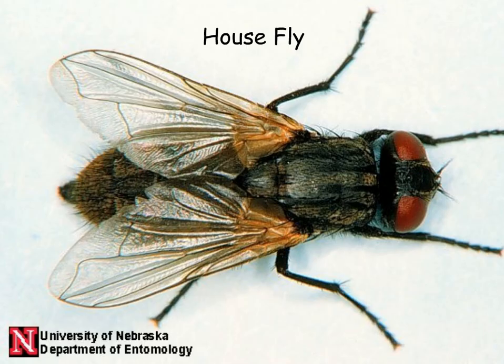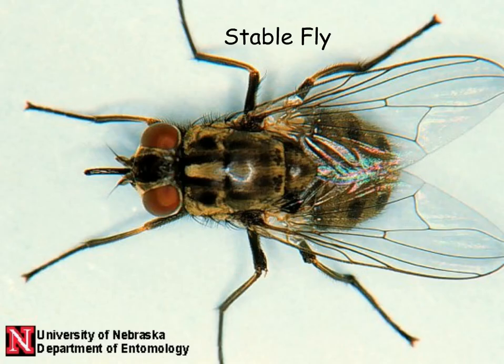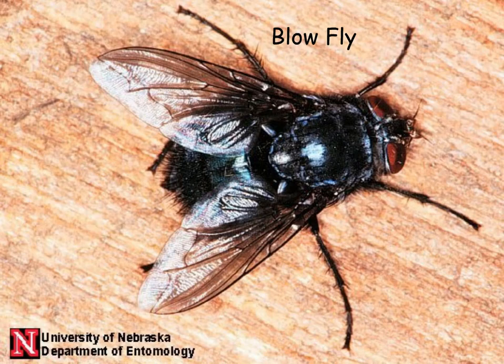Let's look at a few of the flies that might come to a body. First, we have the common house fly, which has sponging mouth parts. Then we also have a stable fly, which also comes to the body — you can tell it has a piercing sucking mouth part, different from the house fly. Probably the most prominent fly found on a body is the blow fly, which has a sponging type mouth part similar to the house fly.